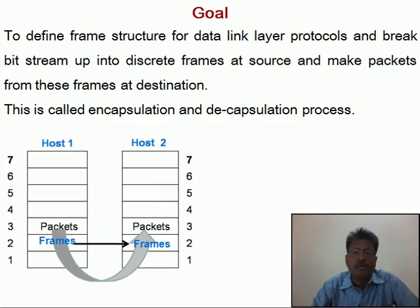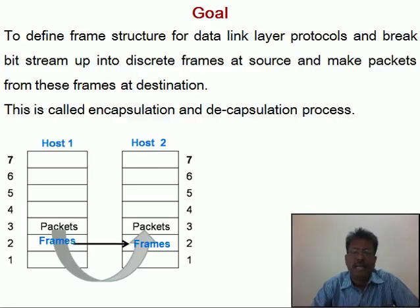The goal for this topic is to define frame structure for data link layer protocols and break the bit stream up into discrete frames at the source, and make packets from these frames at the destination. This overall process is called the encapsulation and decapsulation process. In encapsulation, the data link layer converts packets into frames at the sender side, and in decapsulation, the receiver converts frames into packets.